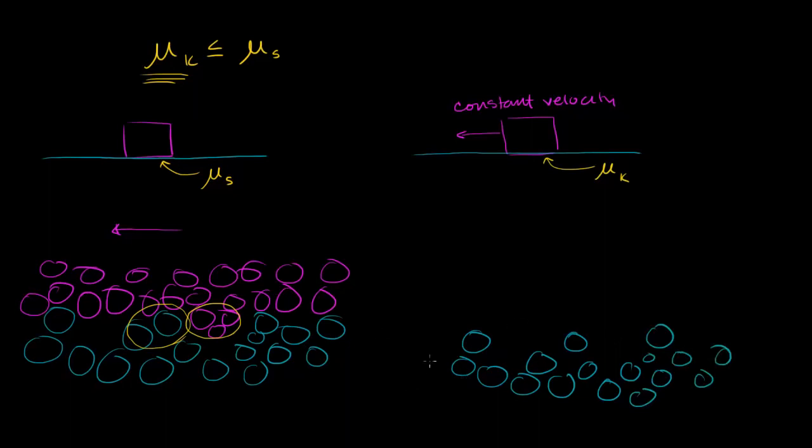So maybe it looks like that. This is supposed to be the same surface. But once it's moving, it's not sitting in these ruts anymore. The whole thing is moving, so it's kind of sliding across the top. And so now it might look something like this. I'll try my best to draw it. So now it might look something like this. Maybe this has been shifted up a little bit so that it can start sliding. You've overcome the static friction. So now it is moving. It doesn't have a chance to really settle in. It has to kind of bounce along the top.